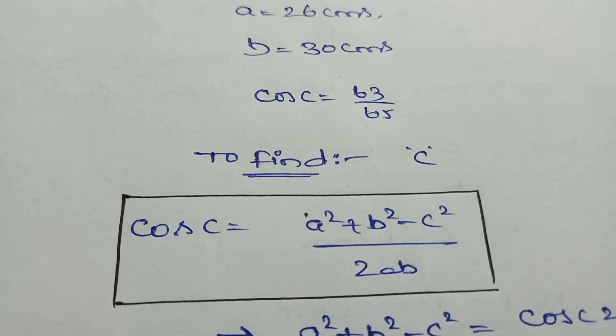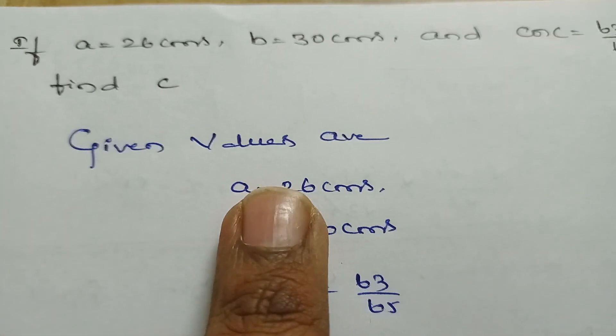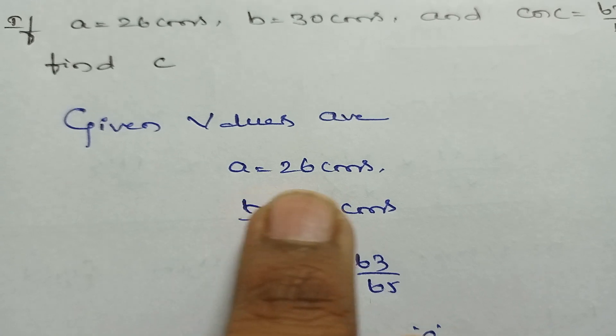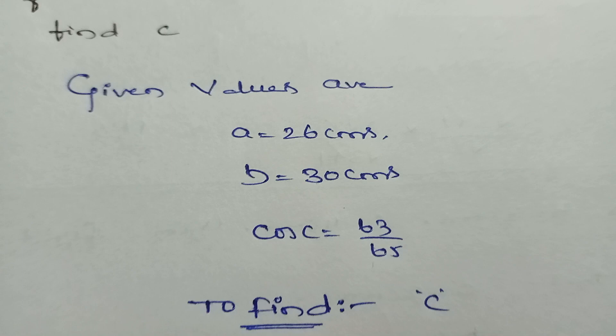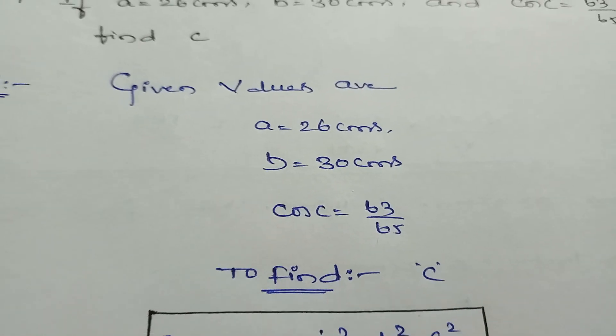But before going to that, first write down what is given in the question: a = 26 cm, b = 30 cm, and cos C = 63/65. To find c value, steps are very important.